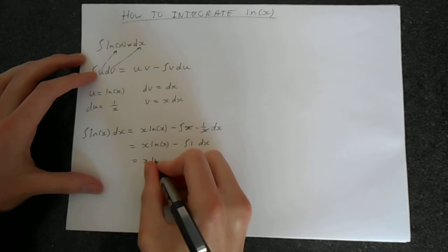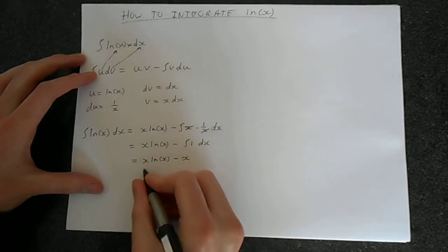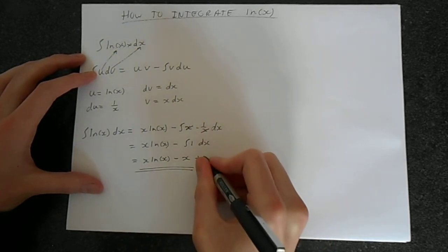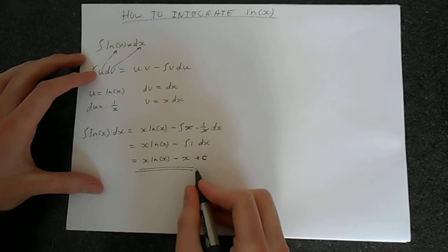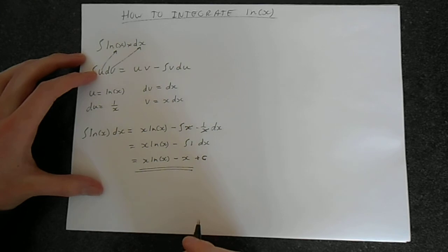So we're left with x ln of x, do this integral here, minus x. This is our answer, except, remember, we have a plus c on the end. This is the integration. So that is the integral of the natural logarithm of x.